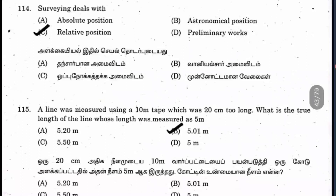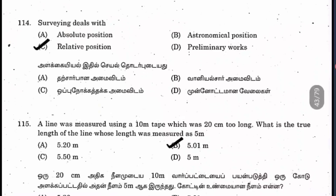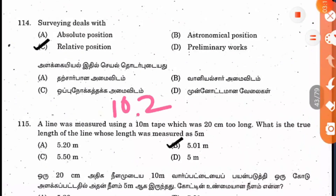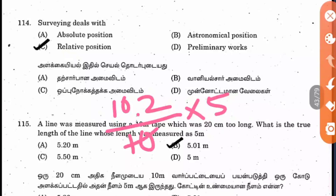Question 115: a line was measured using a 10-meter tape which was 20 centimeters too long. What is the true length of the line measured as 5 meters? Converting 20 cm gives 0.2 m, so the tape is 10.2 m. True length = (10.2 / 10) × 5 = 5.1 meters. The option given as 5.01 appears to be a misprint; the accurate answer is 5.1 meters.